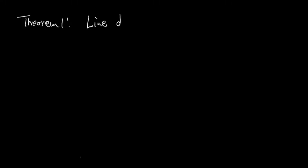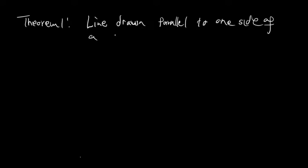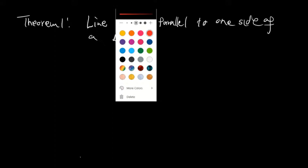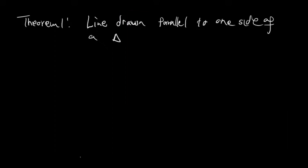Hi guys, this is Denise Wallamini speaking, welcome to Academia E-Learning. We're going to be looking at Theorem 1, which is part of Euclidean Geometry for Grade 12. Theorem 1 states that the line drawn parallel to one side of a triangle — and by the way, don't think of Theorem 1 from Grade 11; these are two different things.